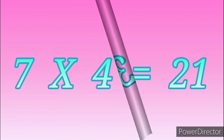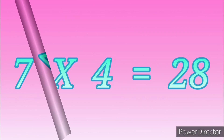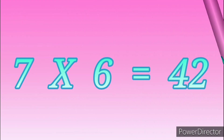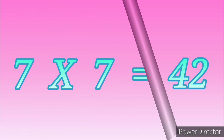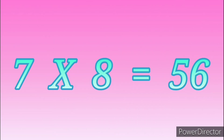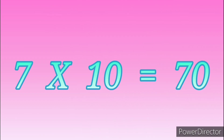7 threes are 21. 7 fours are 28. 7 fives are 35. 7 tens are 70.